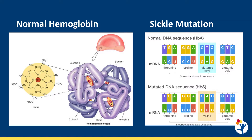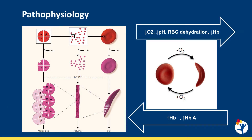Normal adult hemoglobin is a tetramer composed of two alpha and two beta globin chains. Sickle hemoglobin results from a point mutation in the beta globin chain and can polymerize under deoxygenated conditions, leading to stiffening of the red cell and the pathognomonic sickle shape. The hallmarks of sickle cell disease are chronic hemolytic anemia and vaso-occlusion. Sickle cell disease occurs when a patient inherits two copies of the sickle hemoglobin gene or co-inherits one copy of the sickle hemoglobin gene with another beta globin mutation, for example, hemoglobin C or beta thalassemia.